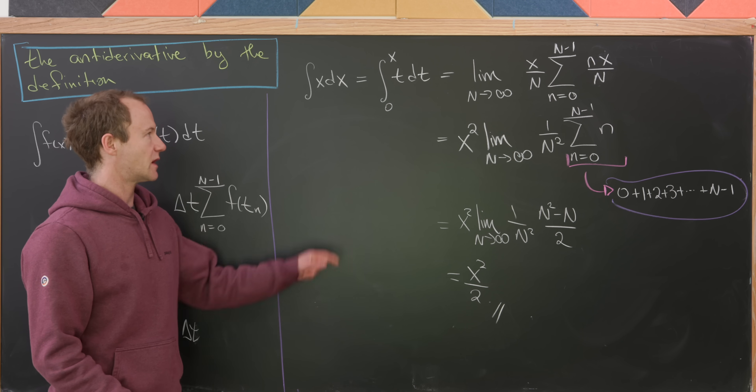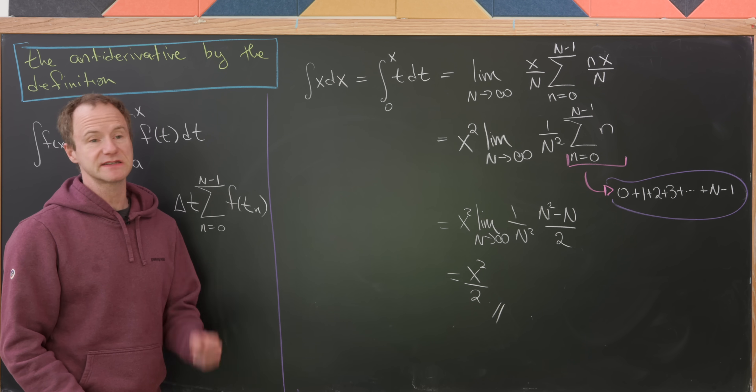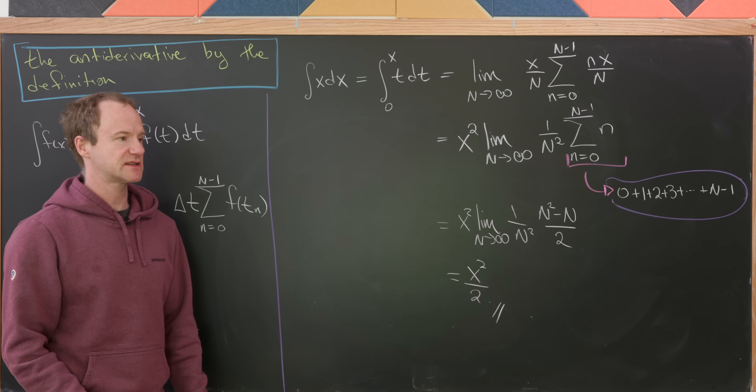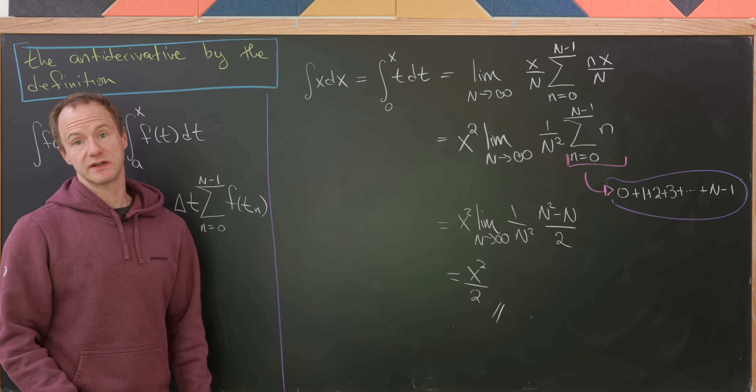As N goes to infinity, N squared minus N over N squared goes to 1, leaving us with one half for the value of the limit. So we end up with x squared over 2, which is exactly what we expected. It seems to have worked out pretty easily in this case.